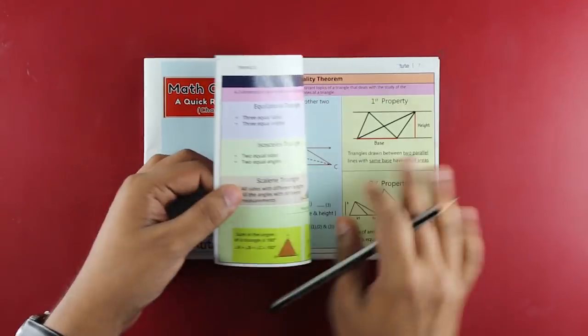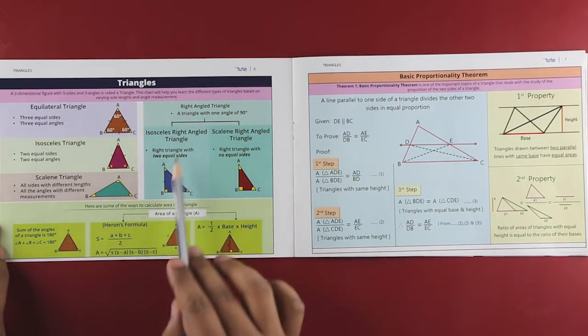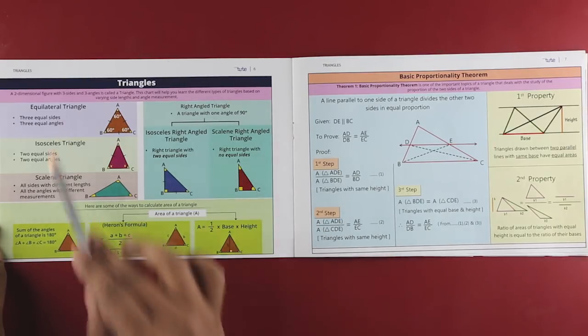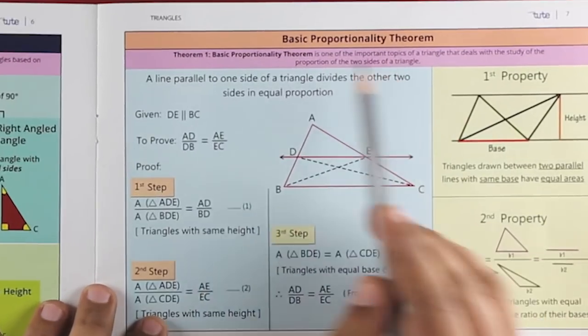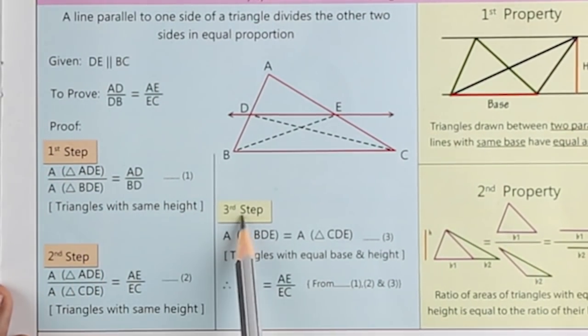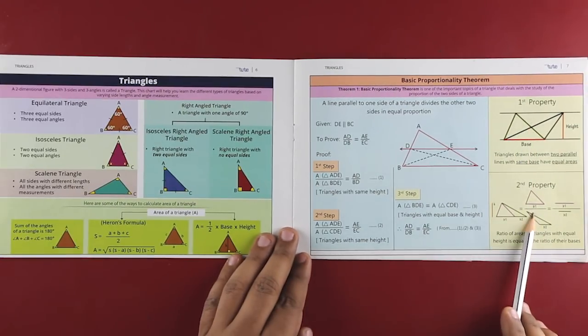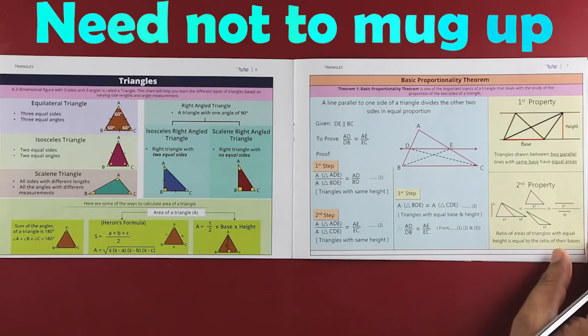For instance, in the chapter on triangles, there are definitions, basic information, formulas, and properties. An important concept in this chapter, known as the Basic Proportionality Theorem, is explained in just three simple steps. One has to logically understand these steps and complete the theorem without having to learn them by heart.